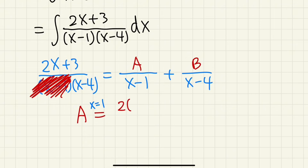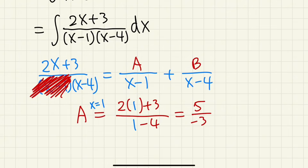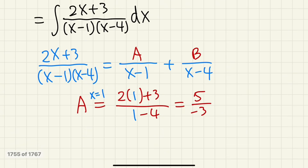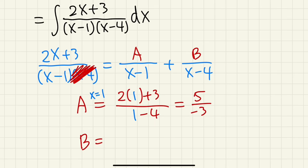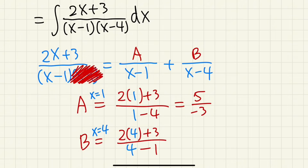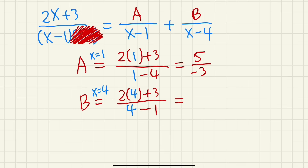Plugging x = 1 into the remaining expression: (2·1 + 3) over (1 − 4) = 5 over negative 3, so A = −5/3. For B, we look at x − 4, set x = 4, and plug in: (2·4 + 3) over (4 − 1) = 11 over 3, so B = 11/3.